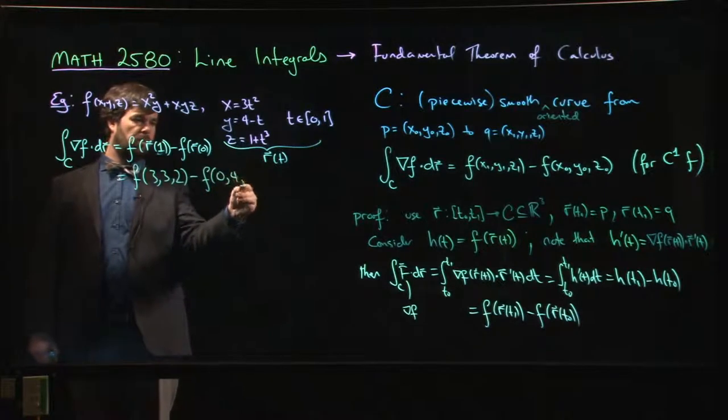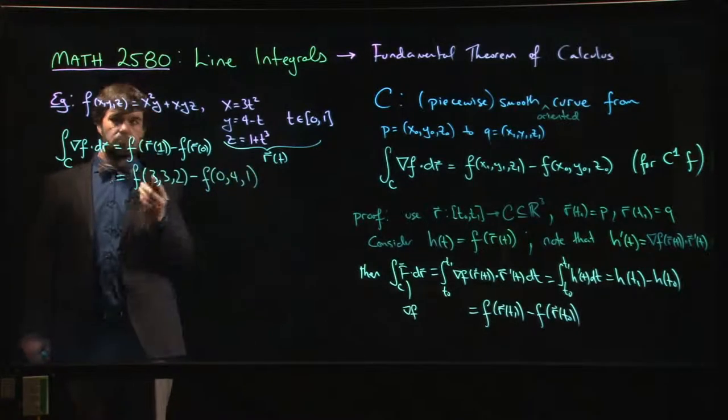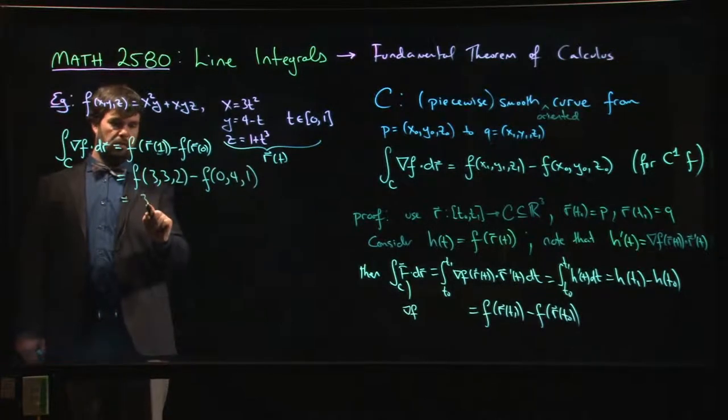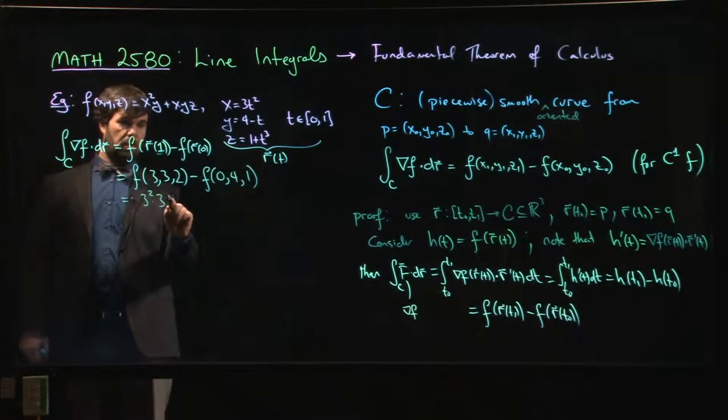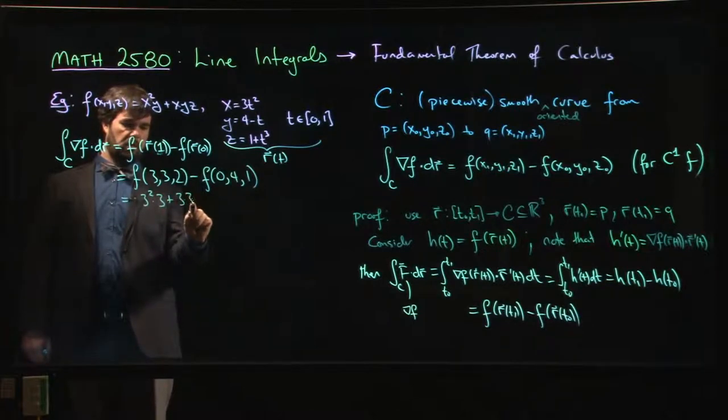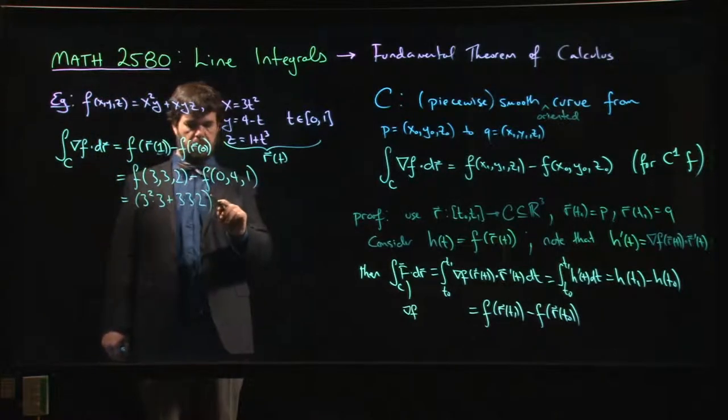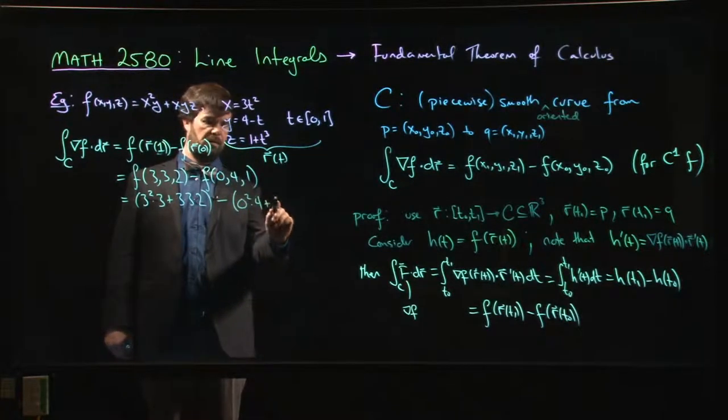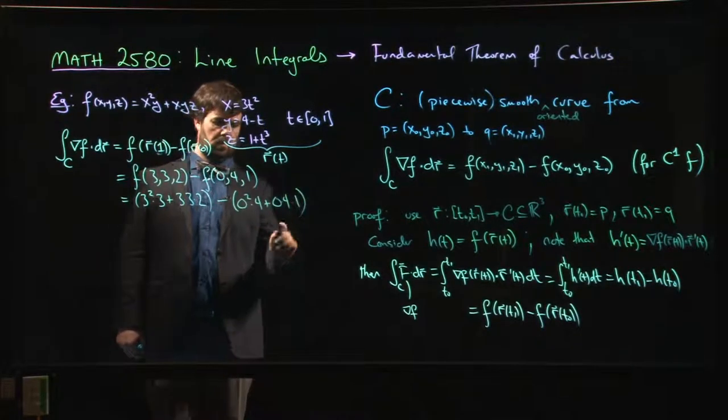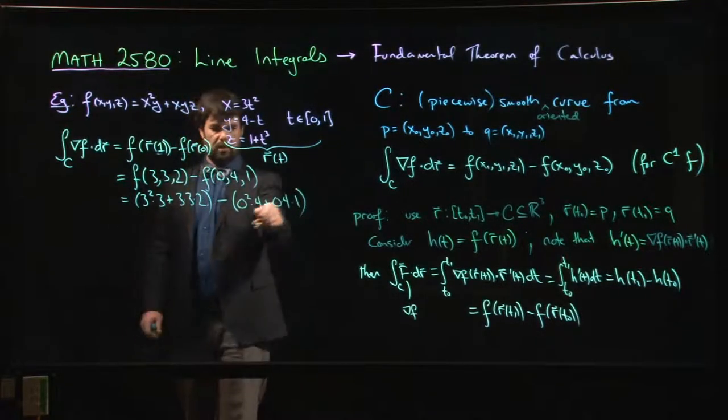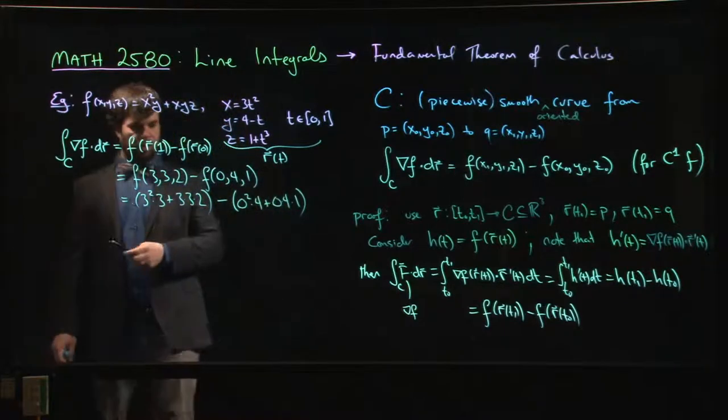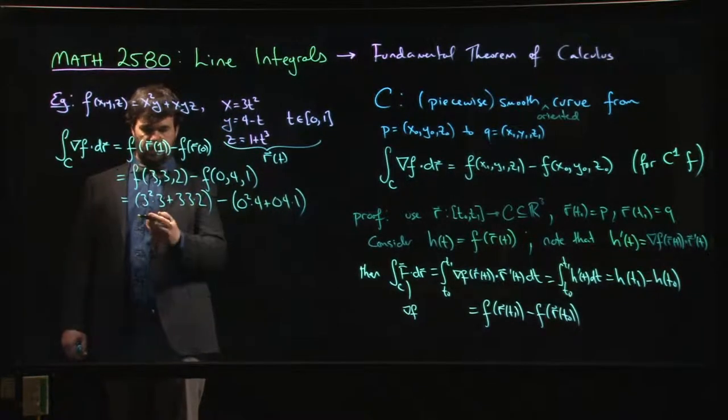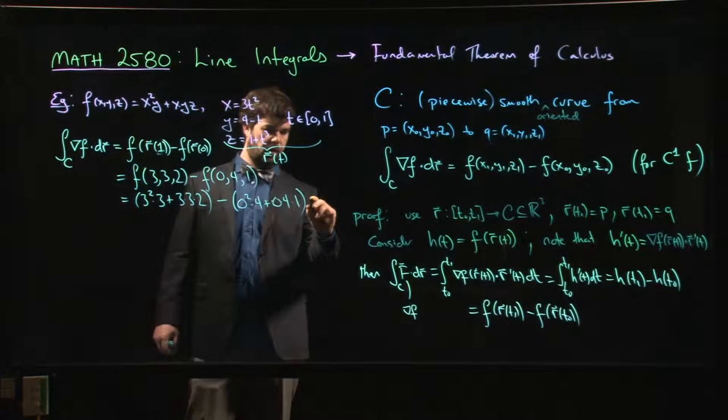When t is equal to 0 we get 0, 4, 1. Okay, so that's 3 squared times 3 plus 3 times 3 times 2, minus, well 0 squared times 4 plus 0 times 4 times 1. Okay, well that part is 0, this part is going to be what, 45, so 45 is our answer.